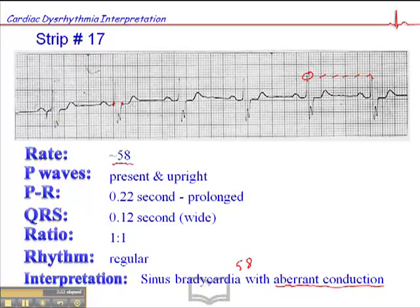There's a previous strip we looked at — a second-degree block type 2 with a wide QRS. That would have been aberrant conduction as well. I didn't speak about the aberrancy in that previous rhythm strip, but that would have been the case: second-degree block type 2 with aberrant conduction. I believe the heart rate was 33 on that one. So this is just a sinus bradycardia with aberrant conduction.